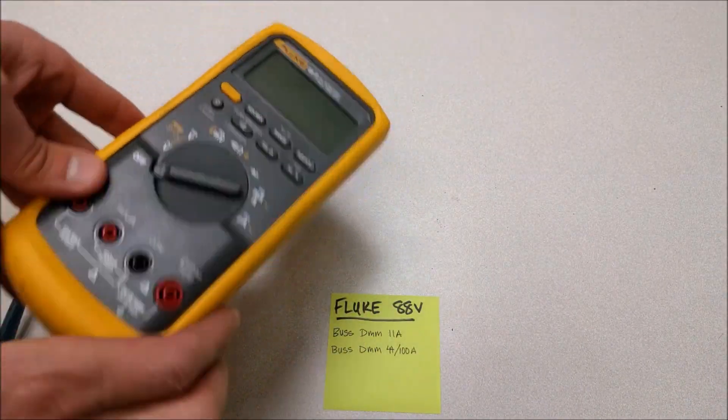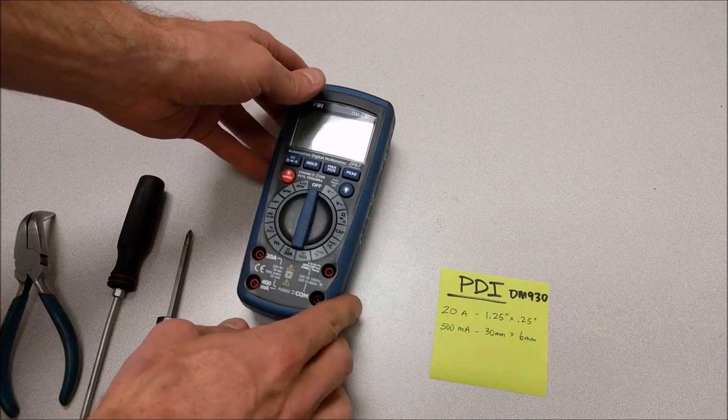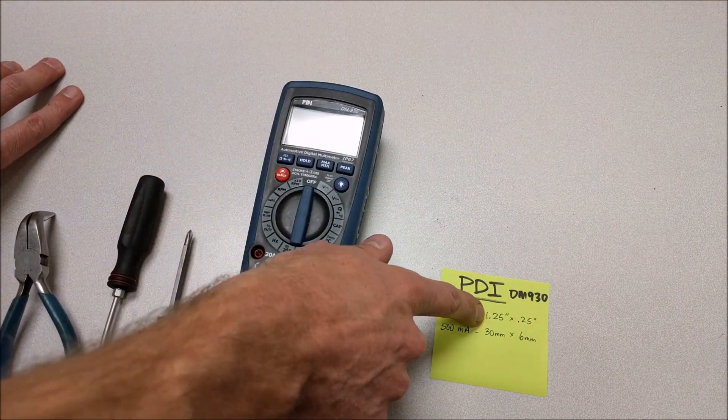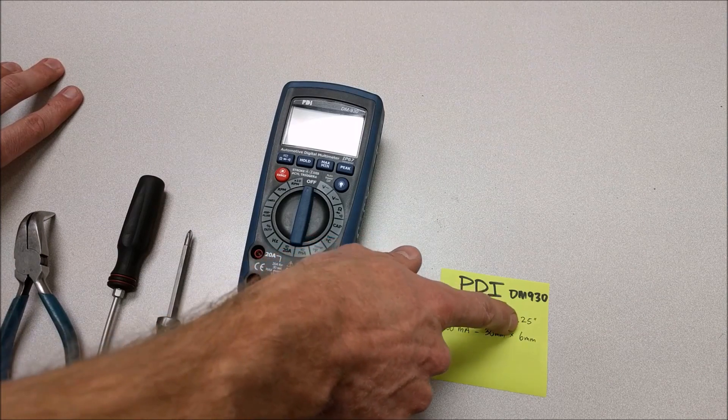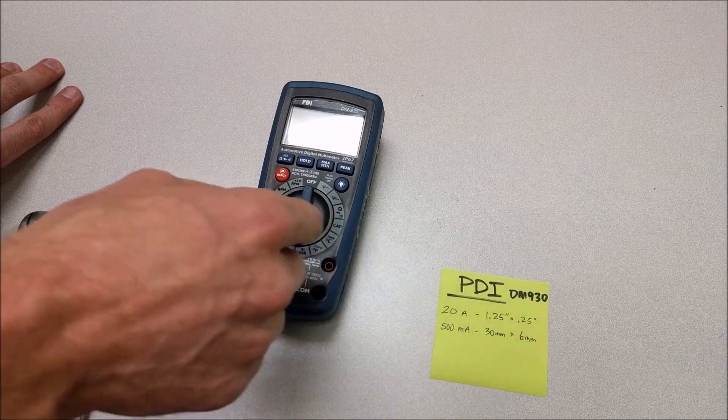Next, we'll do the PDI multimeter. These are the fuses we'll need for the PDI meter. We have a 20 amp fuse and a 500 milliamp fuse in this meter. One is a 1.25 by 0.25 inch fuse, and the other is a 30 millimeter by 6 millimeter fuse.